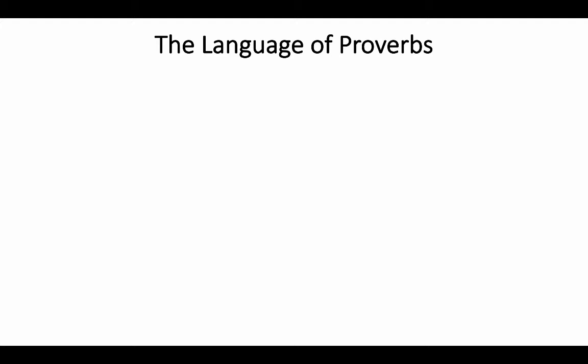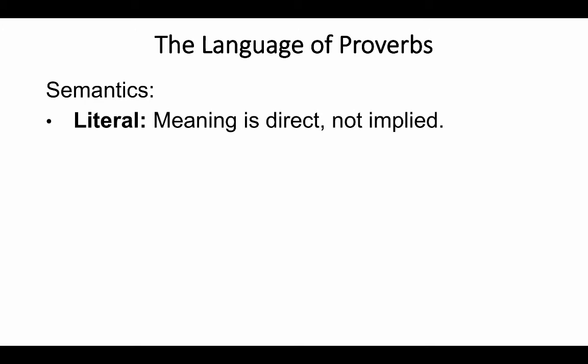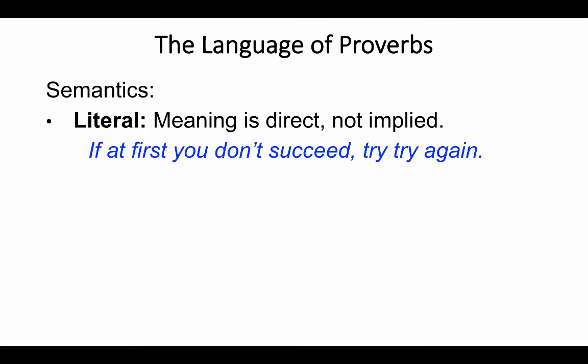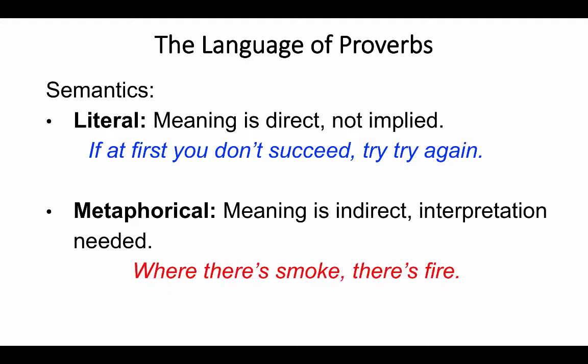Now let's dig a little deeper into proverb language by analyzing semantics—the study of meaning. First, there's literal meaning: meaning is direct and not implied. For example, 'If at first you don't succeed, try, try again'—that's pretty literal. But there's also metaphorical meaning, where meaning is indirect and interpretation is needed. For example, 'Where there's smoke, there's fire'—we're not really talking about smoke or fire; it's metaphorical.